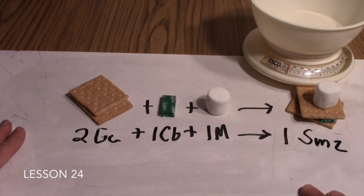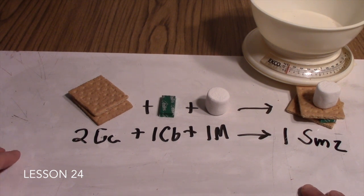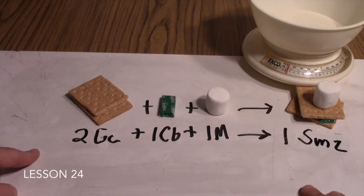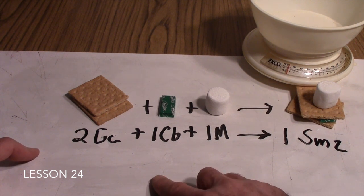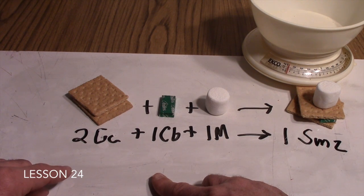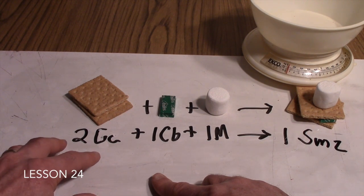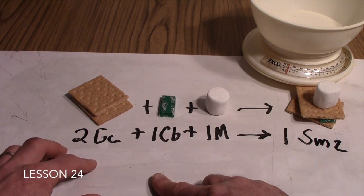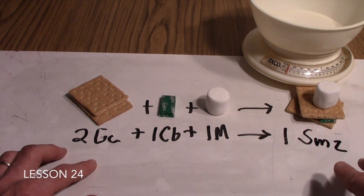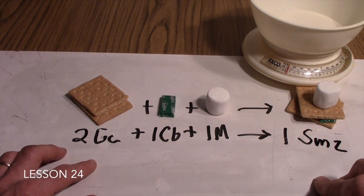To introduce this activity, first review what your students have done so far. Then tell them that in today's lesson, they are going to be given a gram amount of ingredient and be asked to predict a gram amount of product.